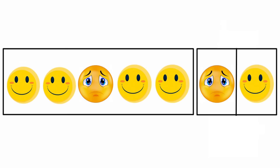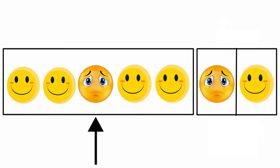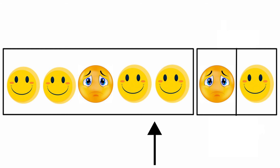Then look at the next pattern. There are emojis. Look at the first set of pattern: two smiling emojis and one sad emoji. We need to fulfill the patterns. Two smiling emoji, one sad emoji, two smiling emoji. Then the next pattern we need to fulfill is - yes, correct - sad emoji. So we take the sad emoji.